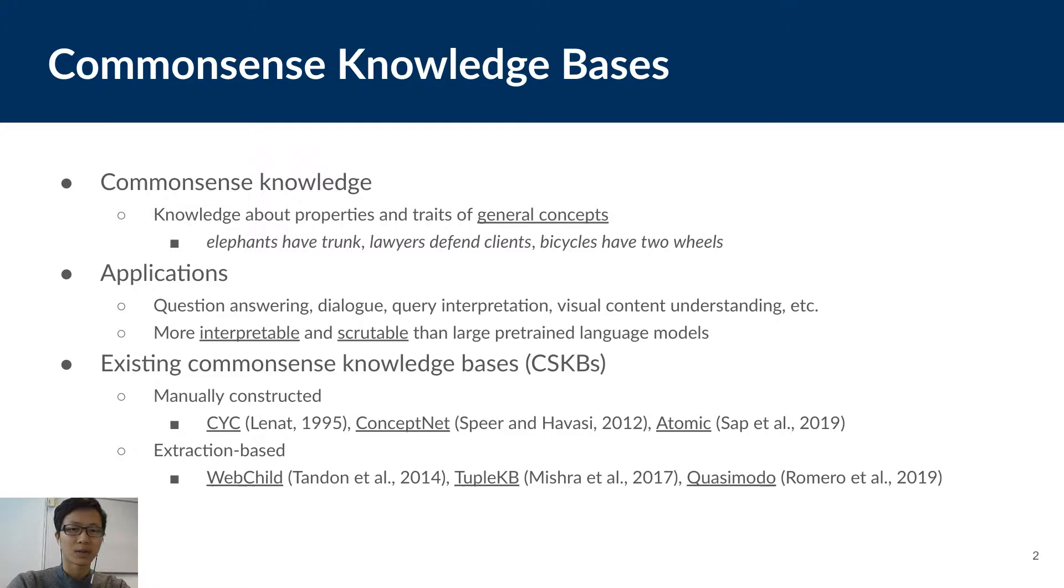Applications of common sense knowledge can be found in many AI-related tasks, such as question-answering, dialogue systems, and similar applications. Although it's recently shown that large pre-trained language models like BERT implicitly store some common sense knowledge in their parameters, structured common sense knowledge bases, or CSKBs in short, have some advantages over the language models. That is, they are much more interpretable and scrutable.